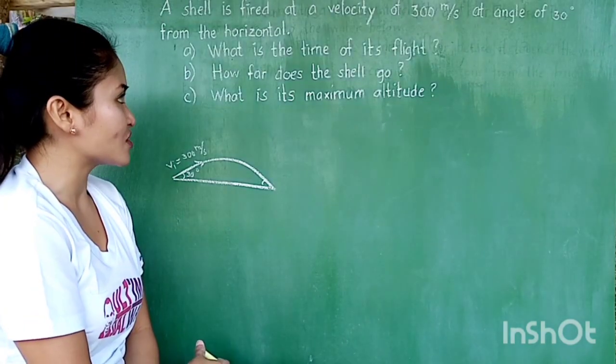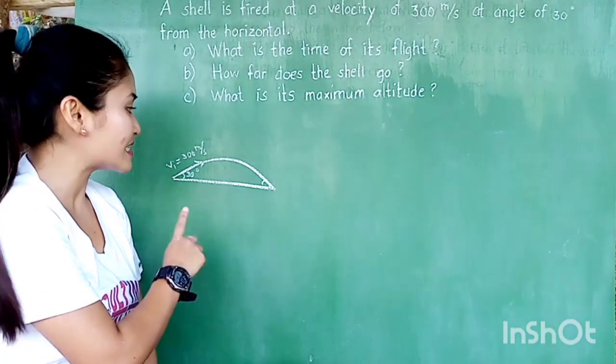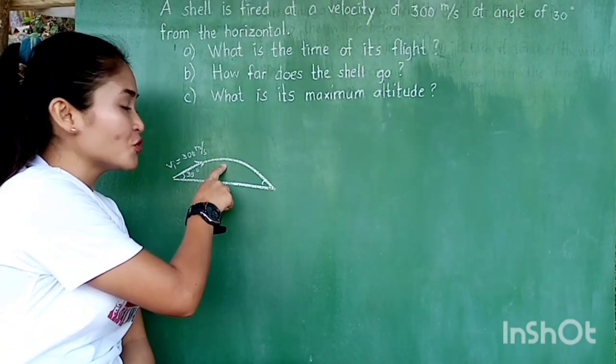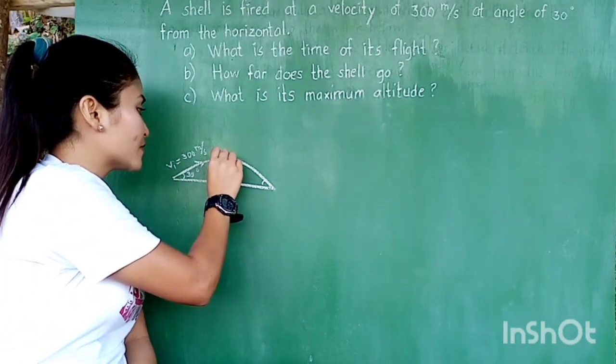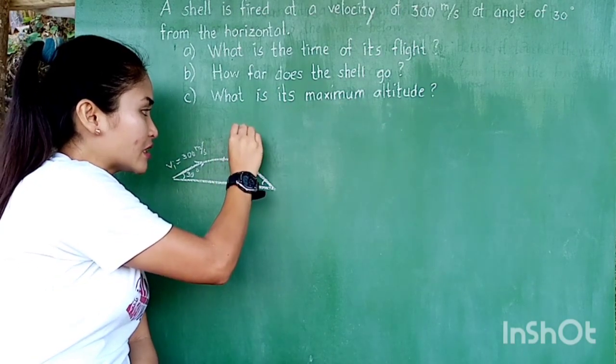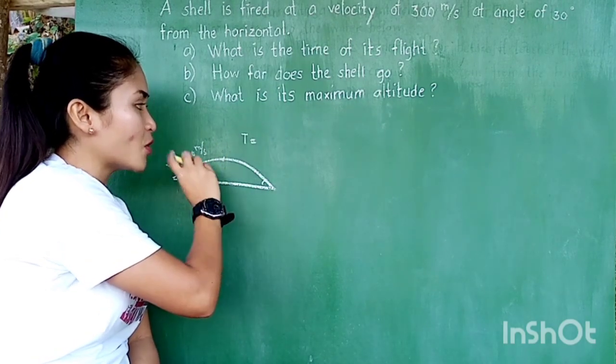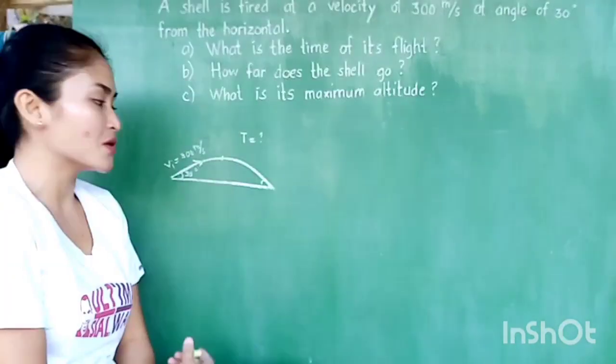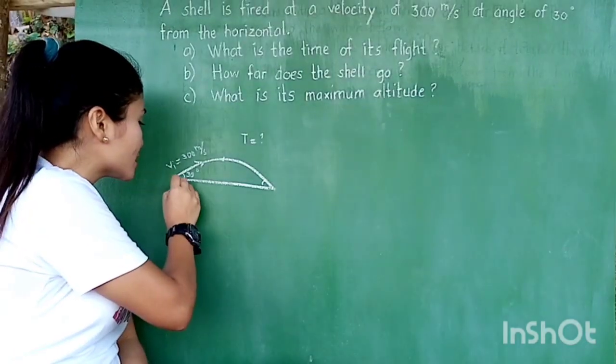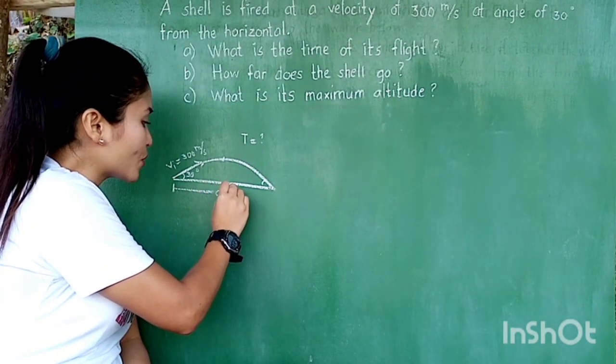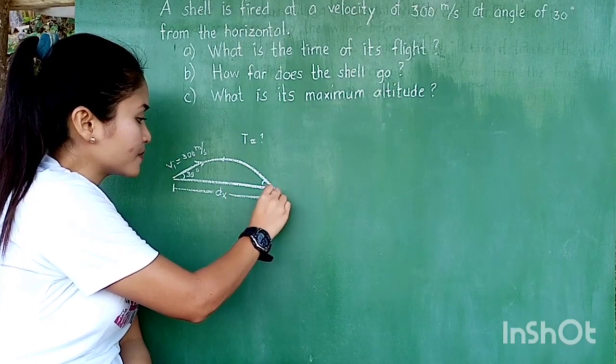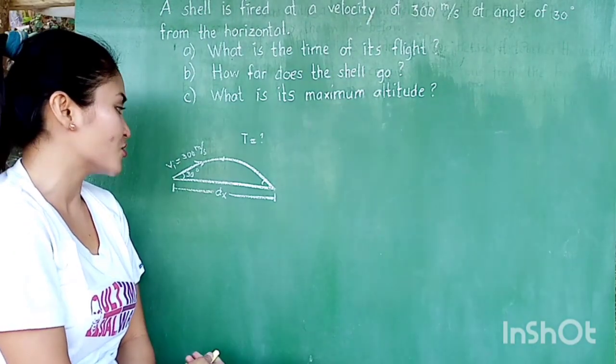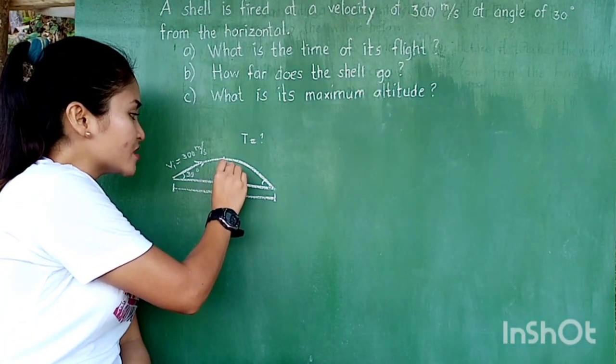The first question asks us to solve for the time of its flight. Since this is a whole parabola, we are talking about the total time, not just the time going up or going down. Next, how far does the shell go pertains to the horizontal displacement, which is our DX. And the third one, what is its maximum altitude or maximum height, pertains to our DY.